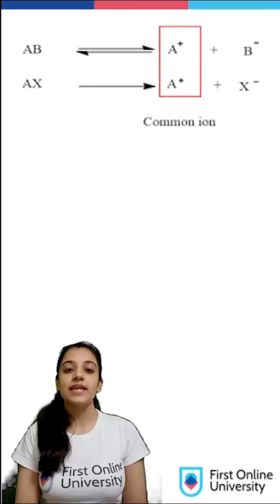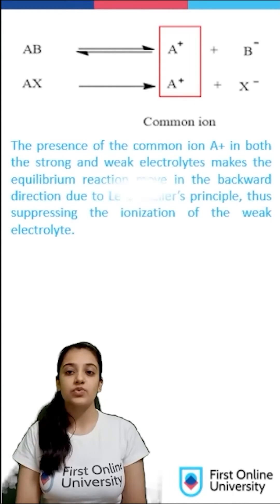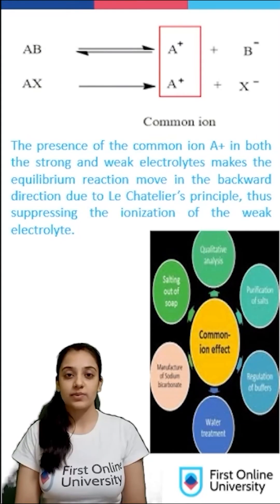This process can be in general explained by the presence of A+ common ion between these two electrolytes where AB is weak and AX is strong and therefore this can be explained on the basis of Le Chatelier's principle.